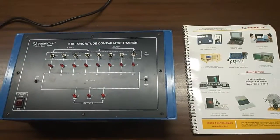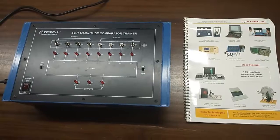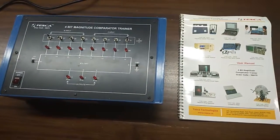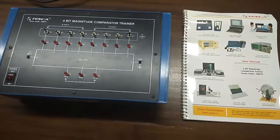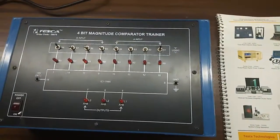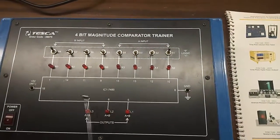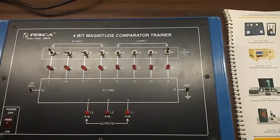Today we are going to show you our 4-bit magnitude comparator trainer kit, order code 38675. This is the trainer kit. This is IC 7485, which is used as a magnitude comparator.